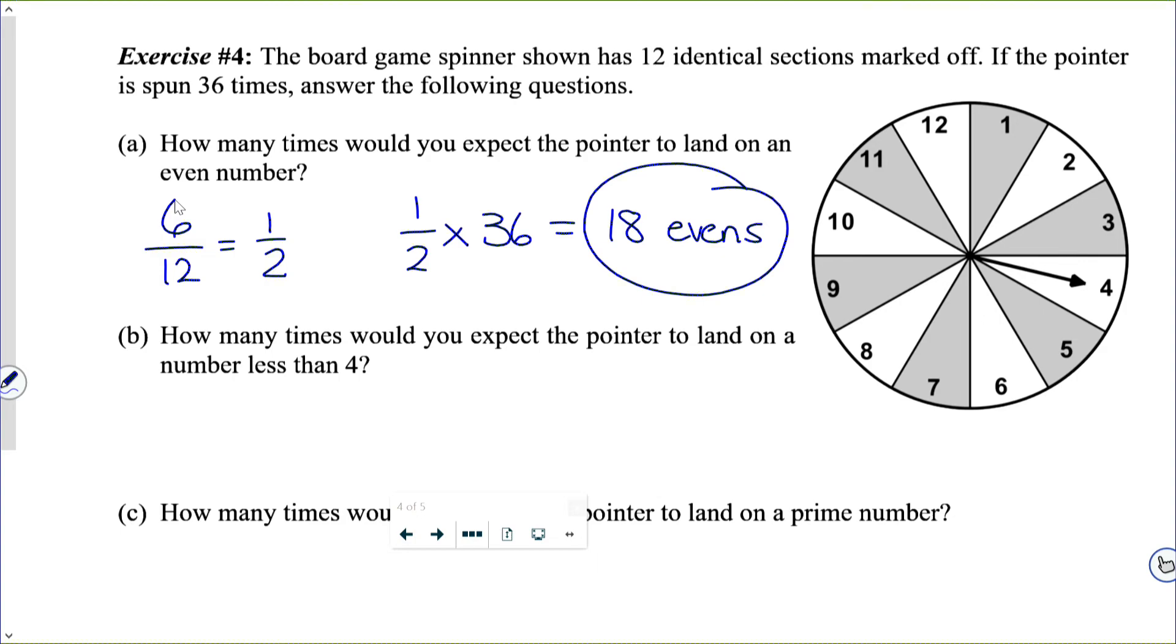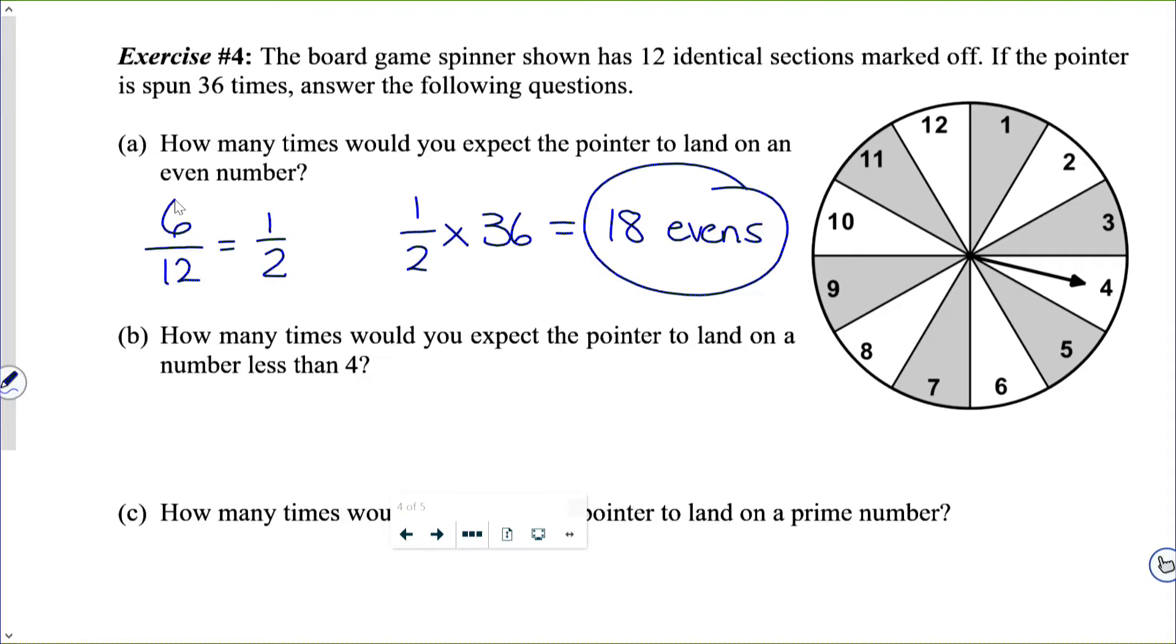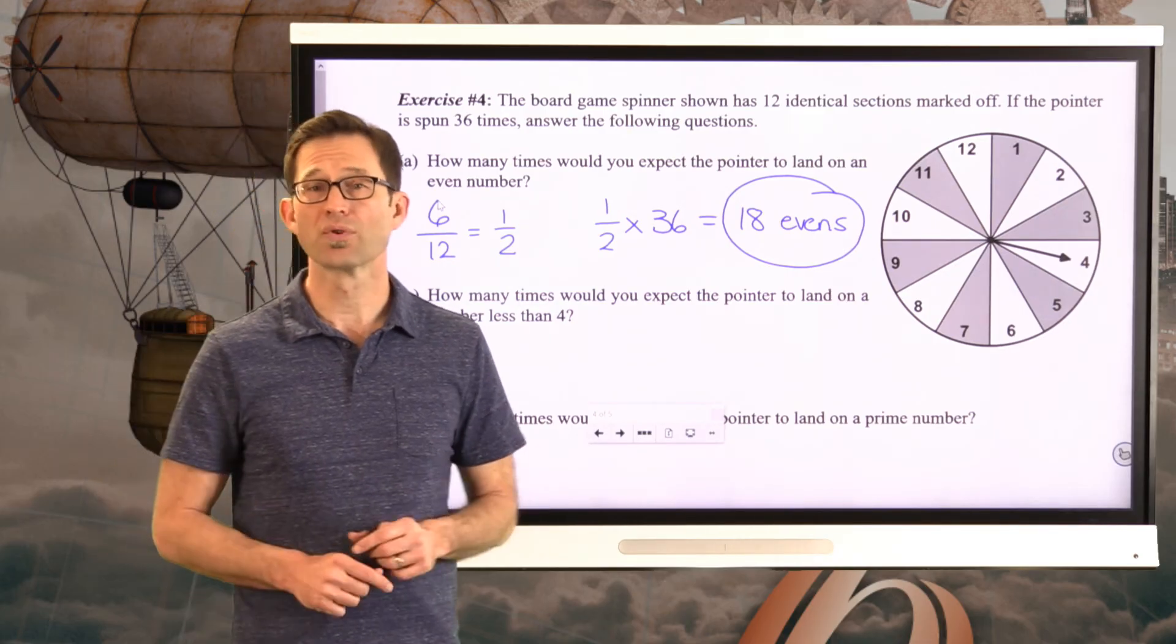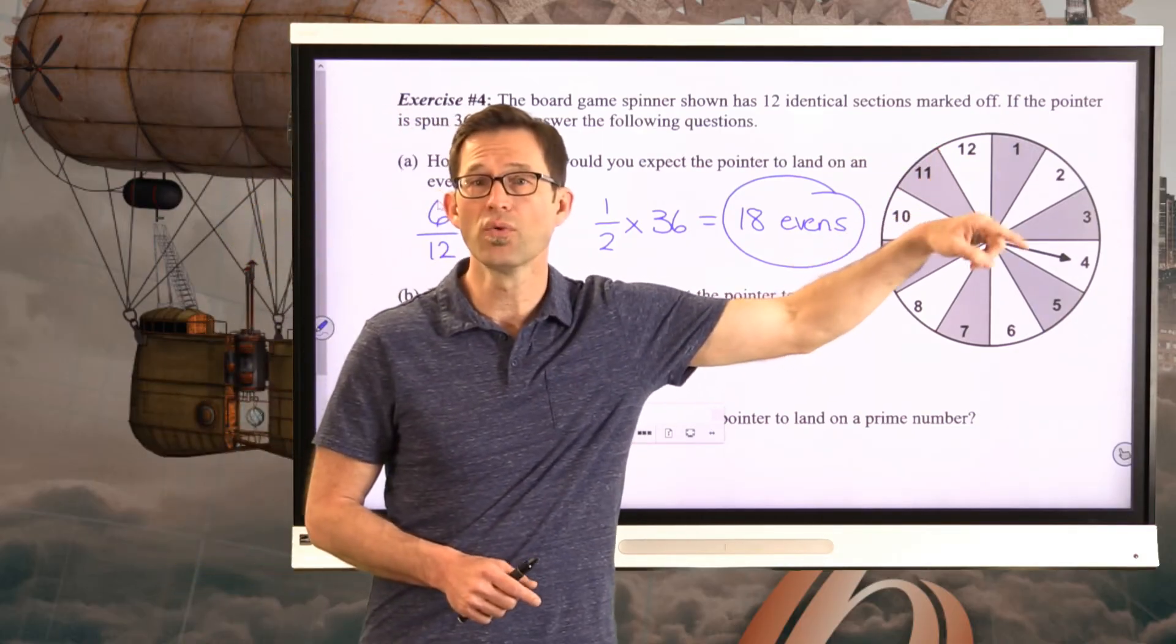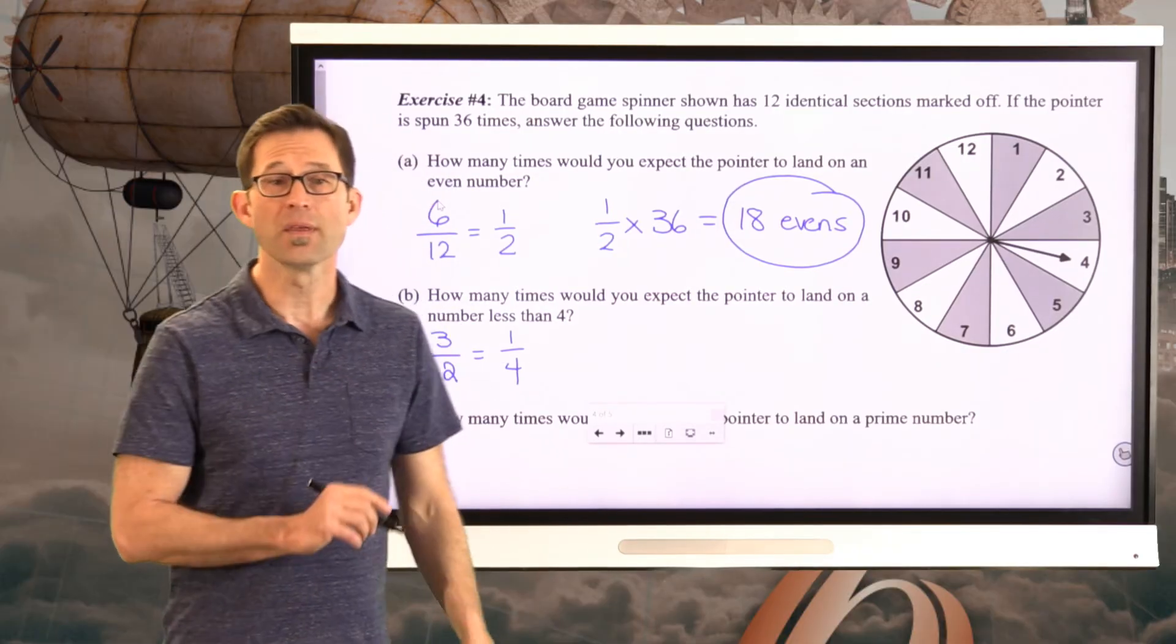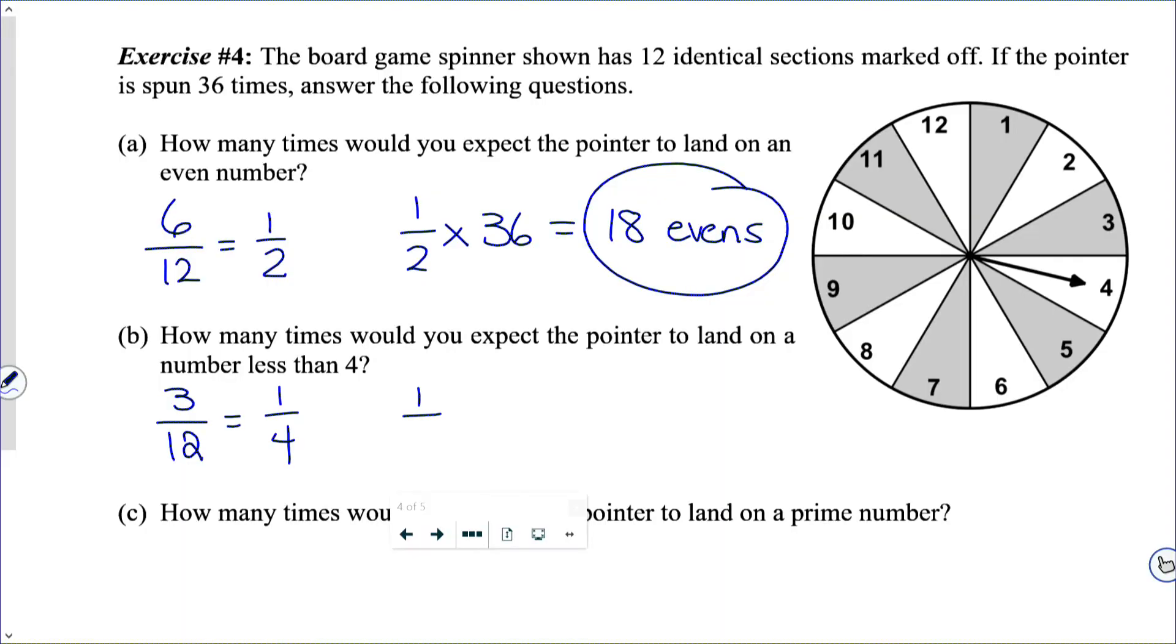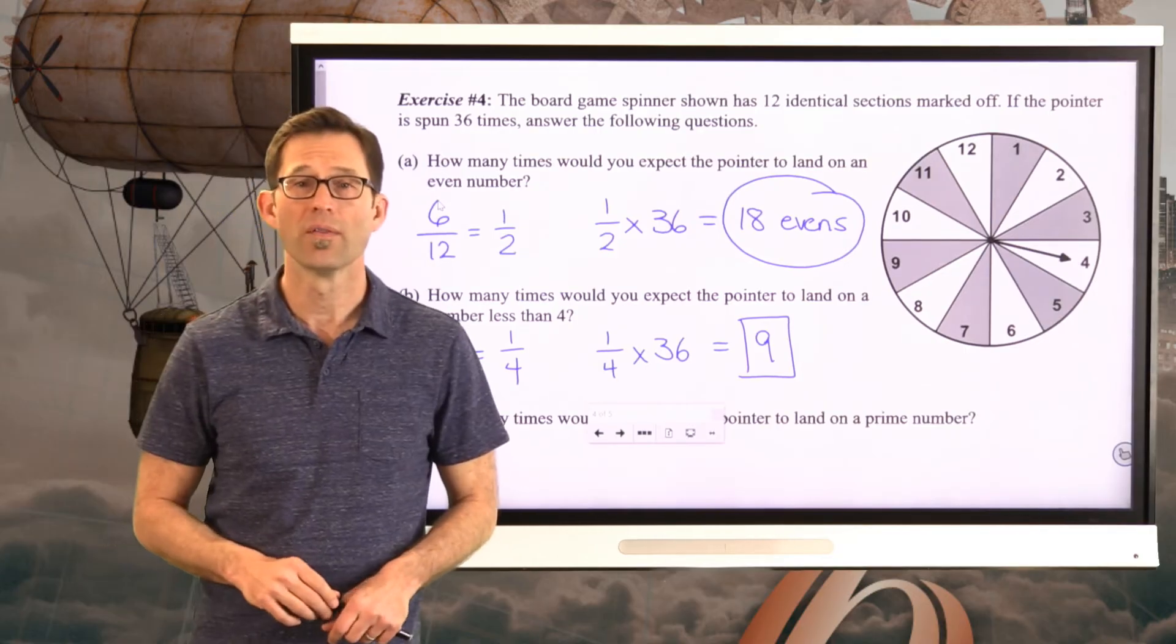Let's take a look at letter B: How many times would you expect the pointer to land on a number less than four? How many of these numbers are less than four? The numbers 1, 2, 3. So the probability that we would get a number less than four would be 3/12, which if I reduce would be 1/4. That tells me that 1/4 of all my spins I expect to get a number less than four. So if I do 1/4 times 36, I'll get 9. So nine times I expect to get a number that is less than four.